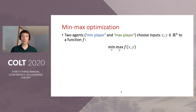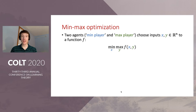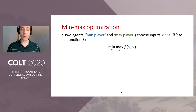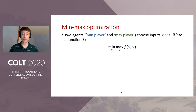In this talk, I'm going to talk about the problem of min-max optimization. In this problem, there are two agents, which we call a min player and a max player, and they choose input vectors x and y, respectively, to some function f. The min player wants to choose x so as to minimize the value of f, and the max player wants to choose y so as to maximize f.